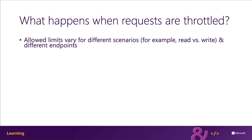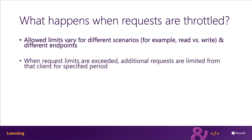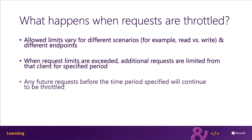When Microsoft Graph determines that a request by a specific client should be throttled, it's telling the requesting client that their requests have been determined to be negatively impacting the service — affecting health, responsiveness, and reliability for other users. Microsoft Graph is telling the client not to issue any more requests until a specific time. This time frame is commonly just a few seconds, but some services may require a longer delay. Any requests made before this delay has elapsed will continue to be throttled, and in some cases it can even cause the delay to be extended.